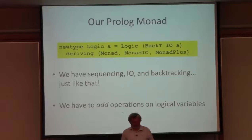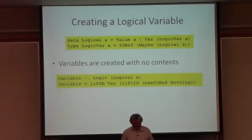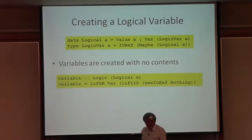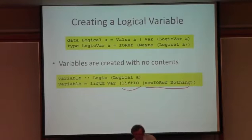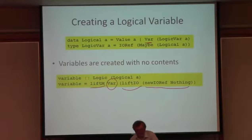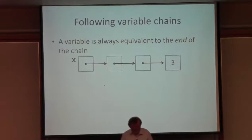Here's my Prolog monad — I've called it Logic. Logic A is isomorphic to BackT IO of A, and now I can just derive a monad instance, a MonadIO instance, and a MonadPlus instance. So I've already got sequencing in this monad, IO operations, and backtracking, just like that. What I have to do to finish the job is provide operations on the logical variables, because they're at the heart of Prolog.